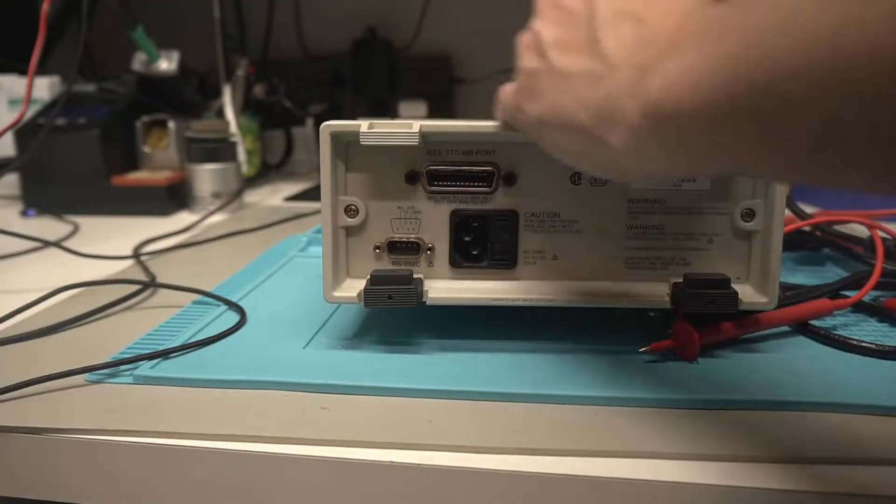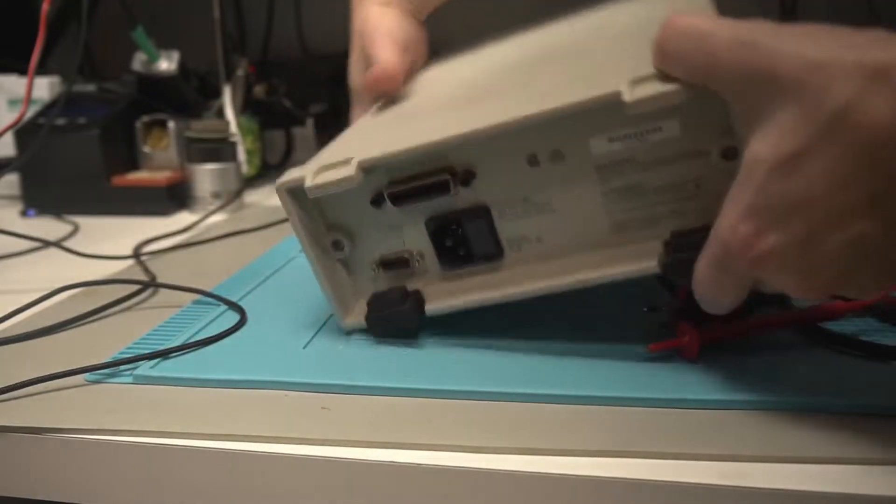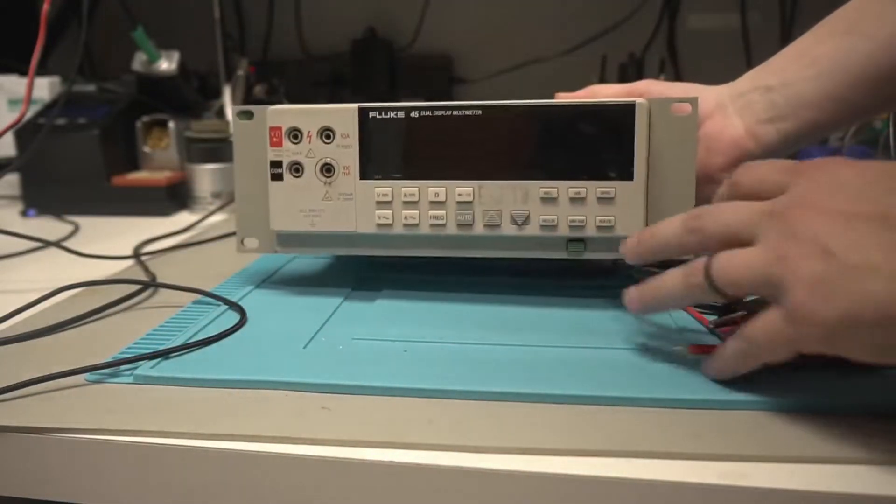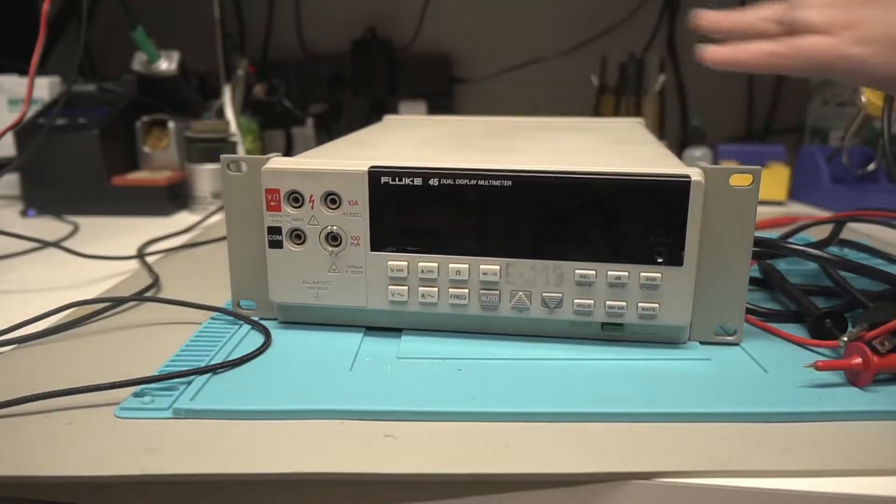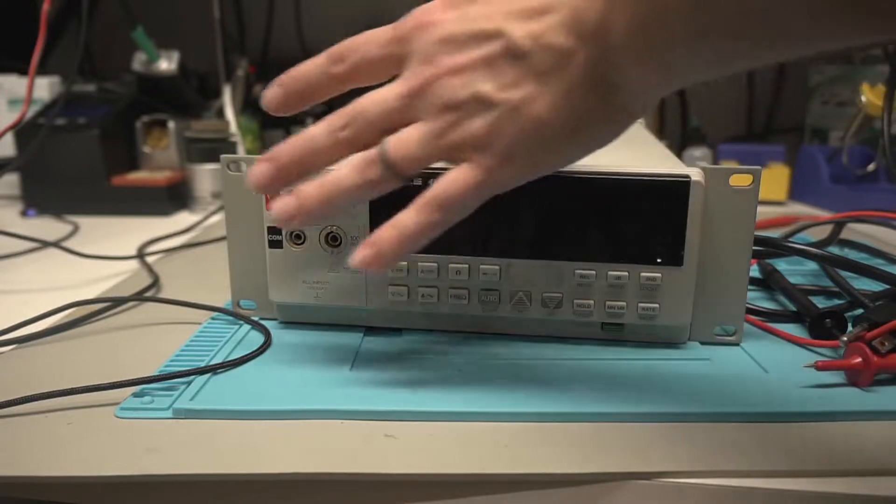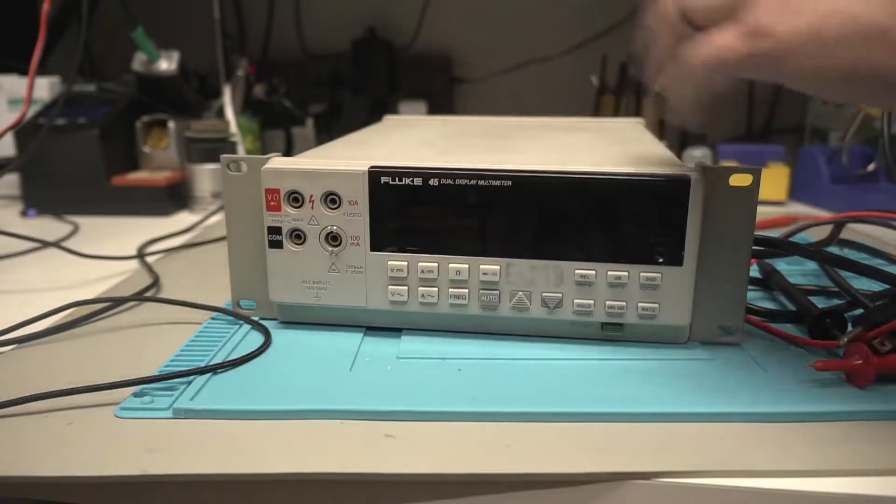My old BK Precision really works good enough for what I do, but I wanted to get something that I could display on the screen. So I picked this thing up used off of eBay for a whopping $150 or $160 ish bucks. That's including shipping.